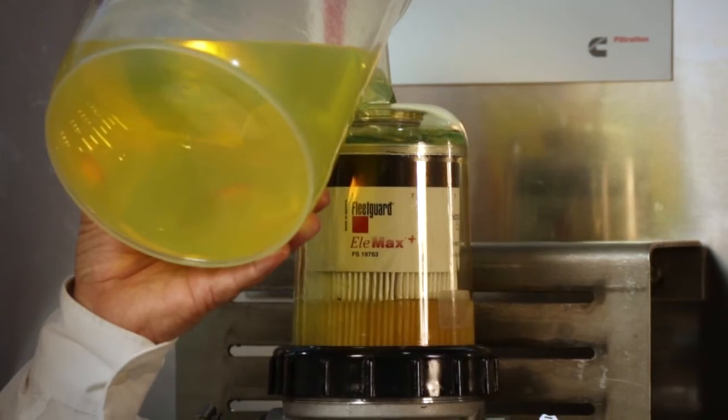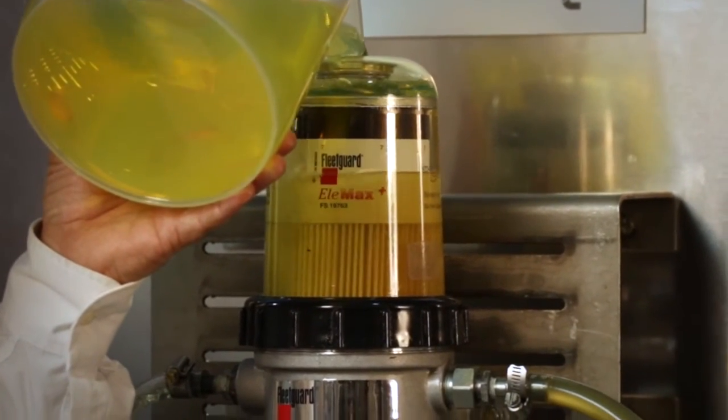Using clean fuel, prime the housing by pouring fuel directly through the top, up to the black band.